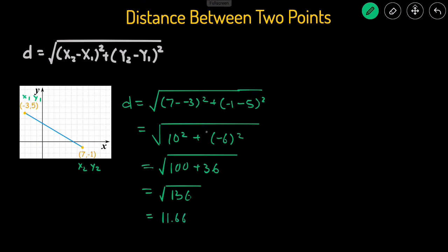And that's how you would find the distance between two points. Just use this equation: x2 minus x1 squared plus y2 minus y1 squared. Find the difference between the x values squared plus the difference between the y values squared. And it doesn't matter which point you call 1 and which point you call 2.